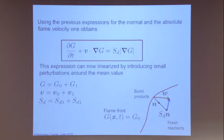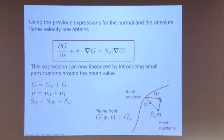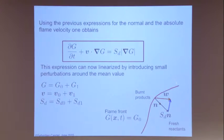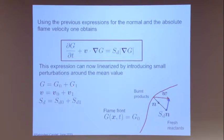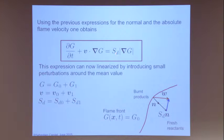The normal is defined as minus the gradient of G divided by its modulus, directed towards the fresh stream. The flame velocity W equals the flow velocity plus the displacement velocity S_D multiplied by N. Putting that into the expression gives the G equation. This is very useful in theoretical studies — Norbert Peters, for example, has written a book on turbulent combustion using that equation to examine the premixed turbulent combustion case.